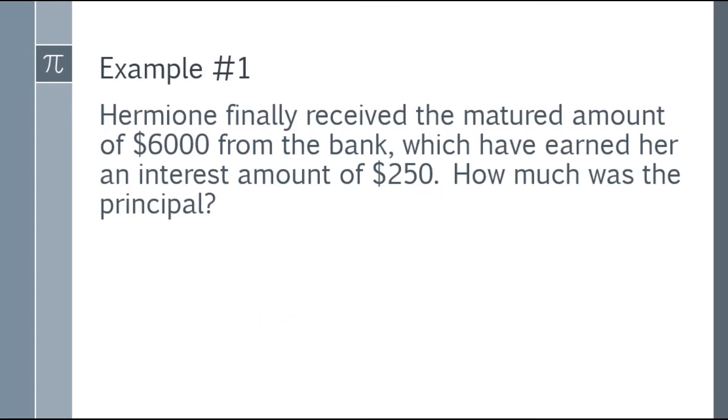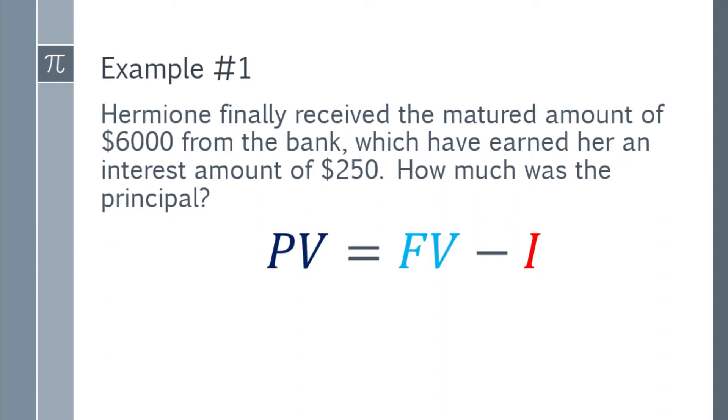Alright, so let's have an easy one first. Example number 1: Hermione finally received the matured amount of $6,000 from the bank which have earned her an interest amount of $250. How much was the principal? So again, principal and present value are the same. So we can now start by placing the formula.